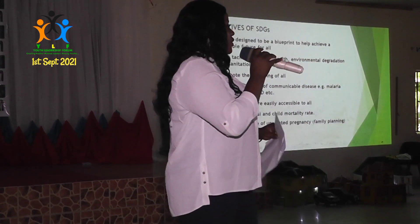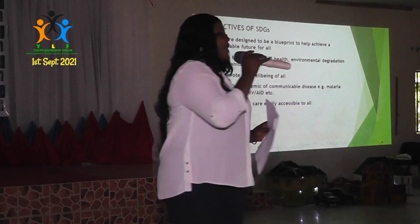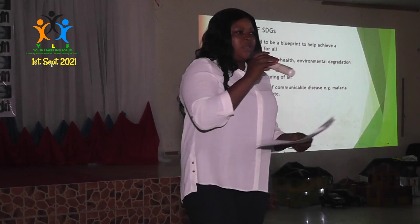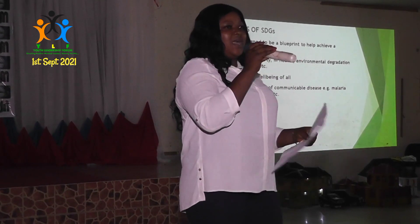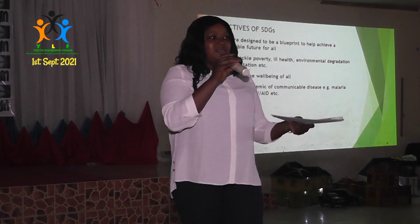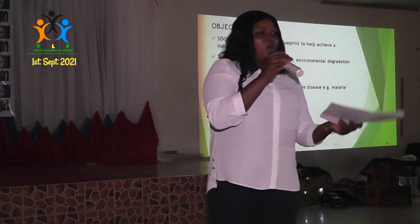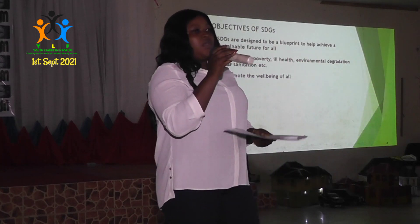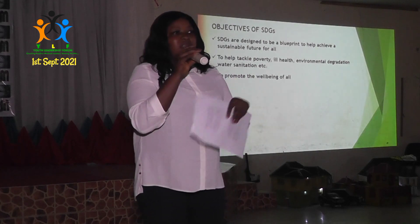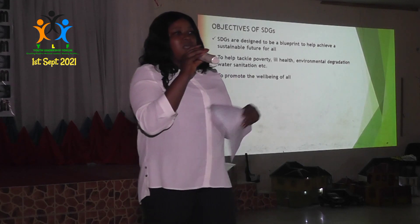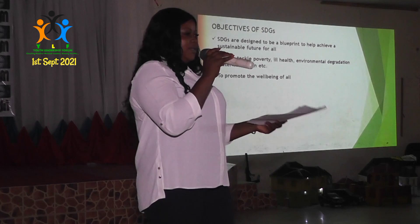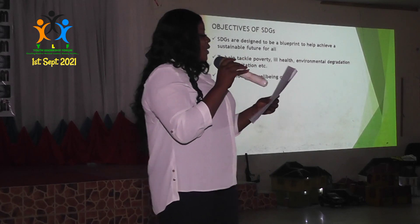The United Nations General Assembly in 2015 saw a need to come up with goals that can support government, support the society and everyone — goals that will affect a common man, whether you are rich, you are poor, you are a child, even infants, even animals, on land and in the sea.